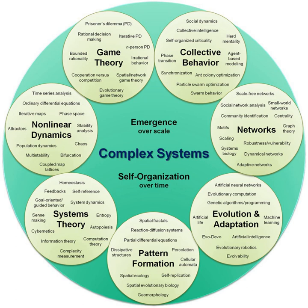Systems theory is the interdisciplinary study of systems. A system is a cohesive conglomeration of interrelated and interdependent parts that is either natural or man-made. Every system is delineated by its spatial and temporal boundaries, surrounded and influenced by its environment, described by its structure and purpose or nature and expressed in its functioning. A system can be more than the sum of its parts if it expresses synergy or emergent behavior.